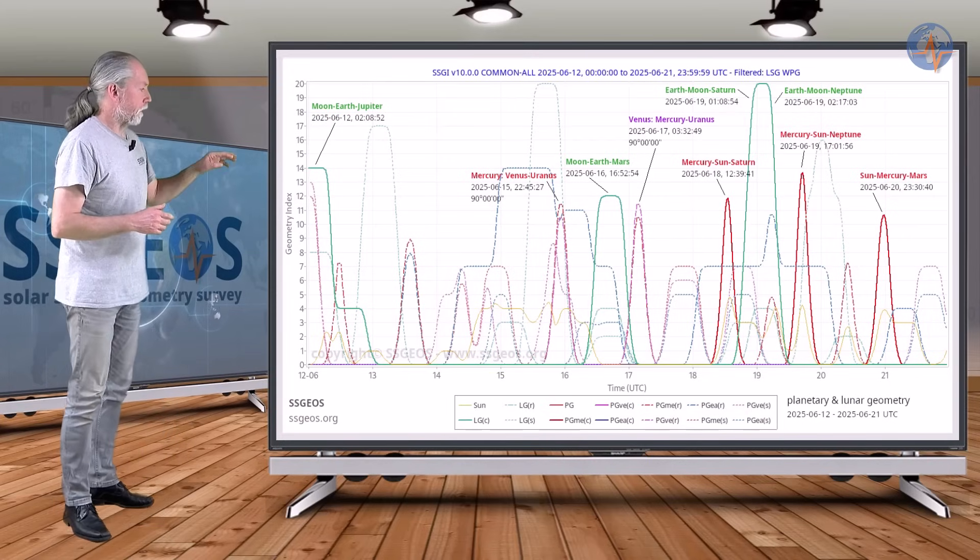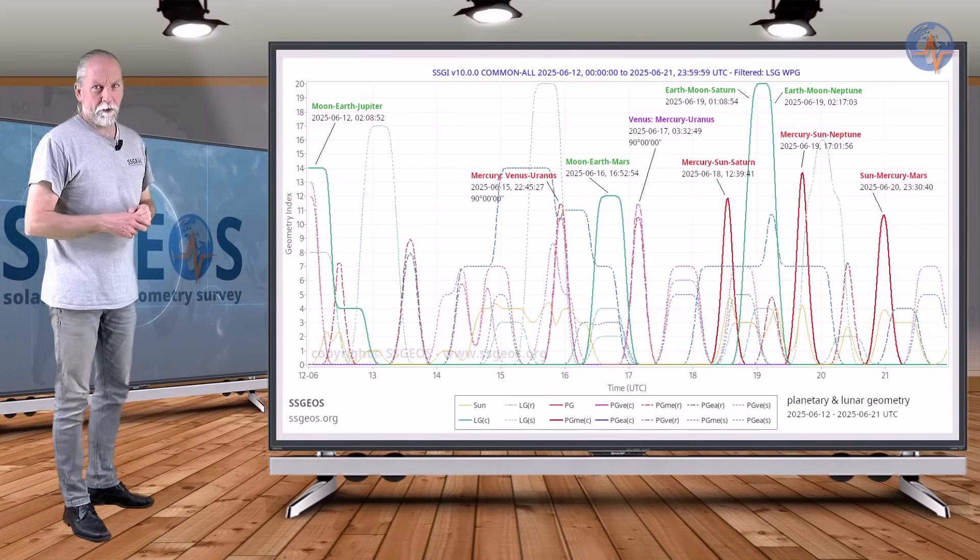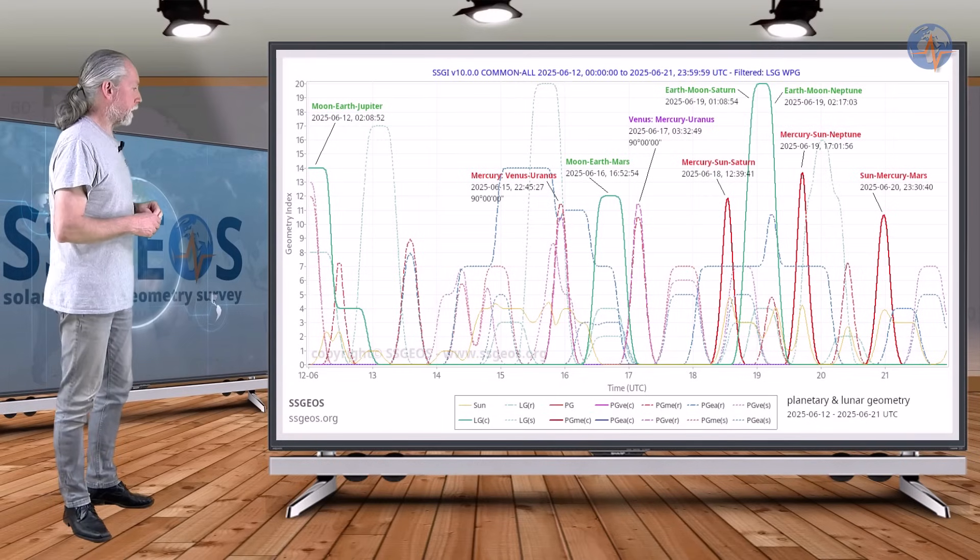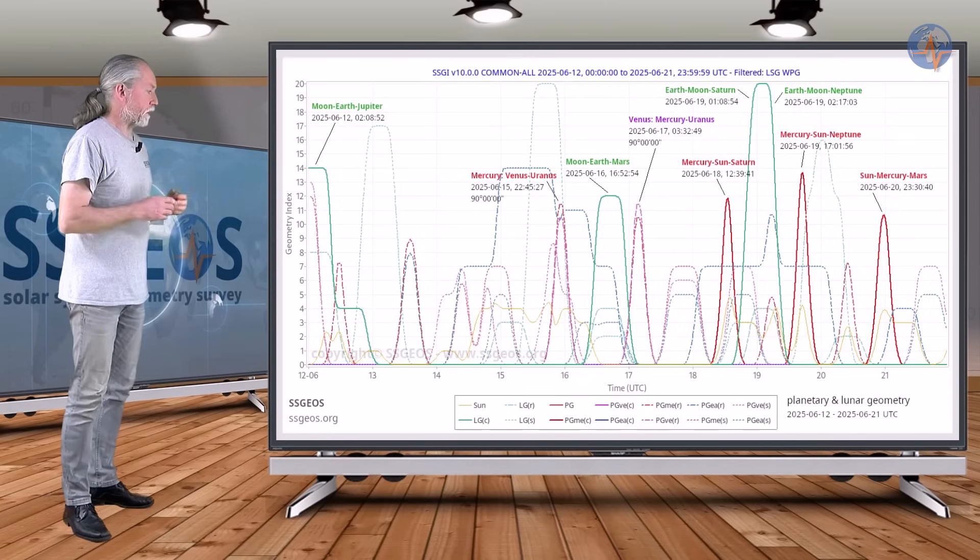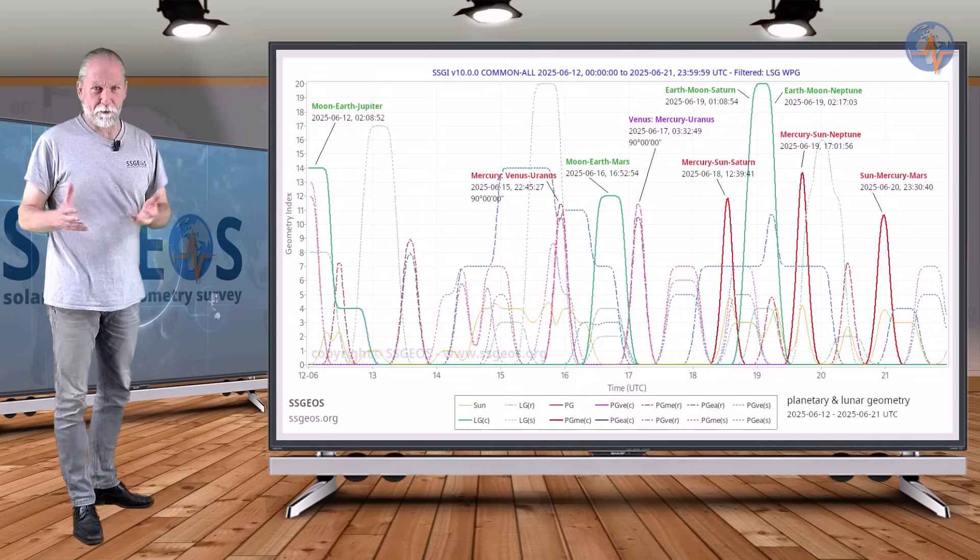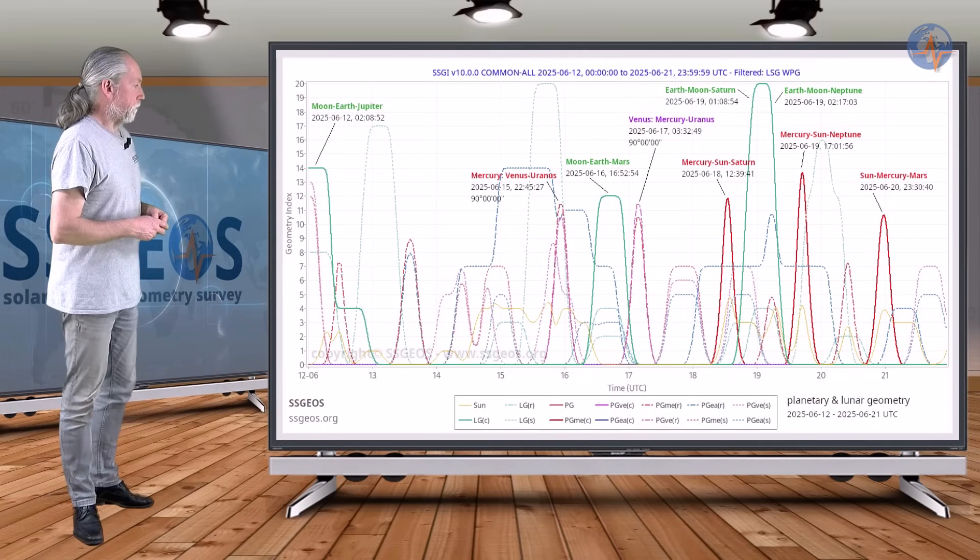Be on extra alert from the 19th to the 21st approximately. There's the potential for larger seismic activity. The Mercury-Sun-Saturn conjunction followed by Earth-Moon-Saturn could typically result in the mid 6 magnitude earthquake around the 20th.